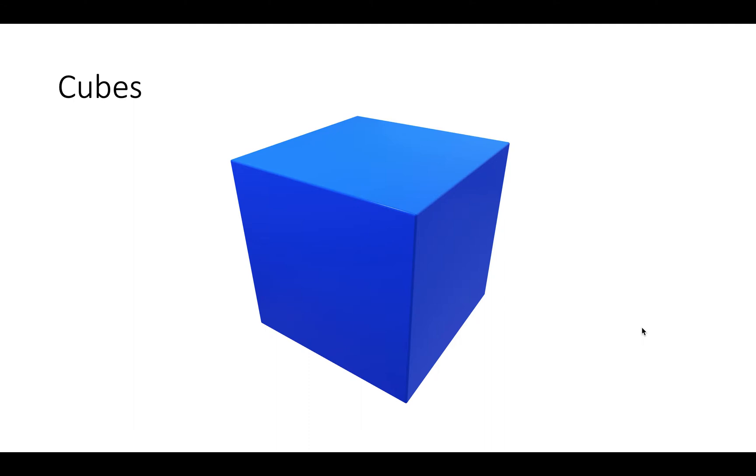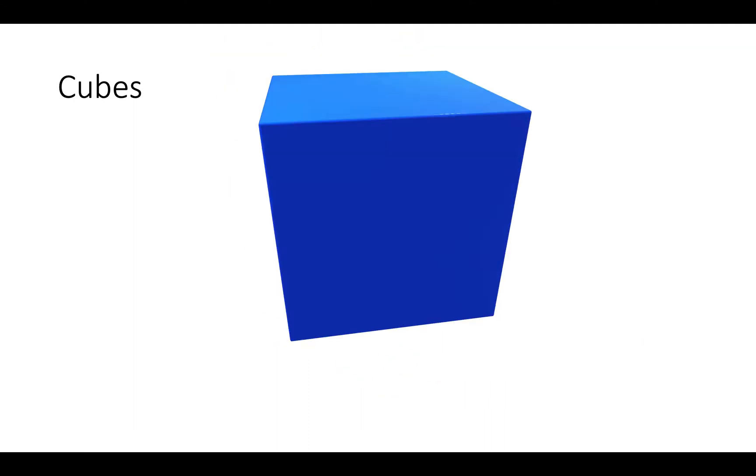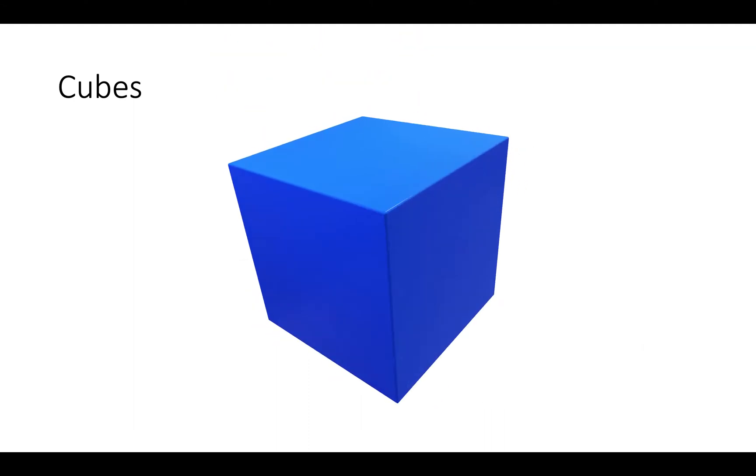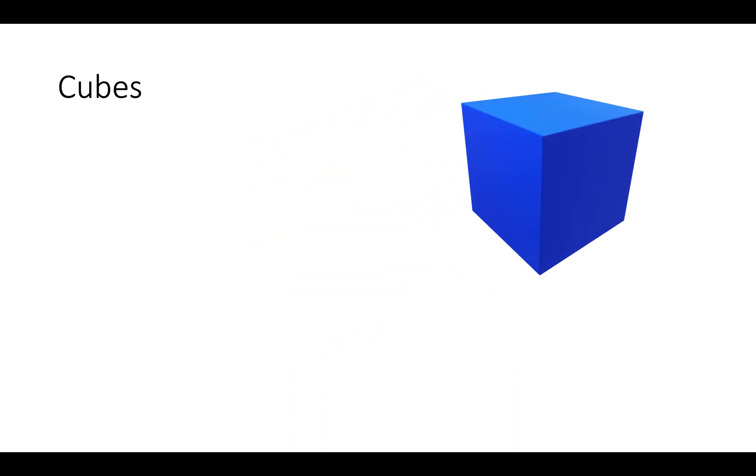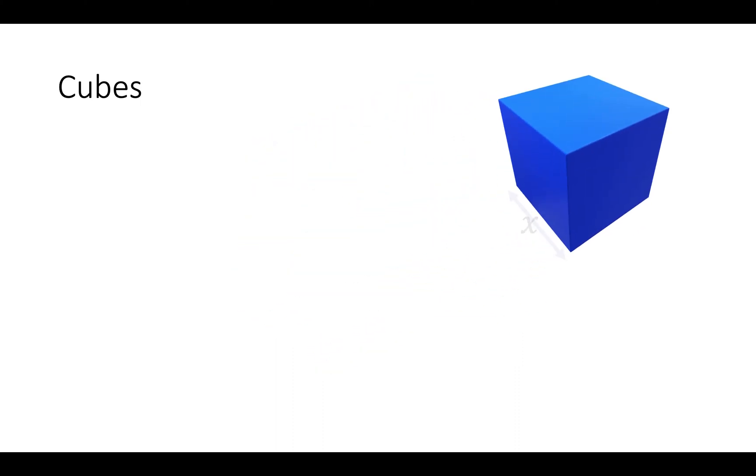So we're going to start with a cube. This is a cube here. It's a 3D shape with squares on each side. So each length of the cube is the same. The width is x, the length is x, and the height is x. So the volume is given by x times x times x, or x cubed.